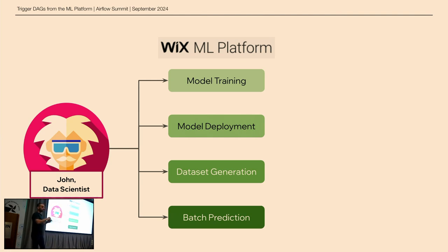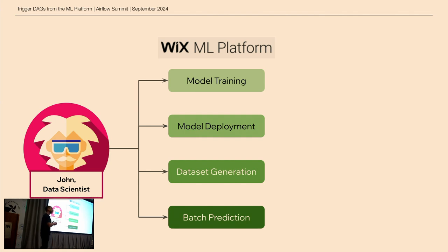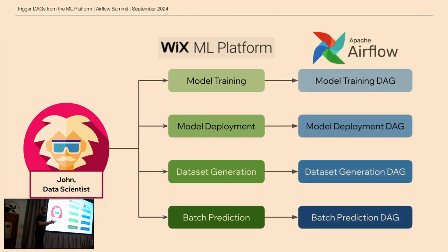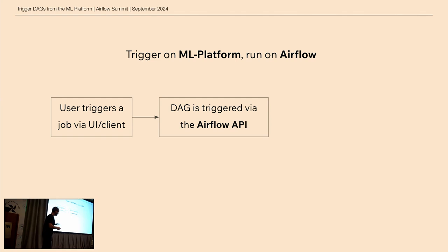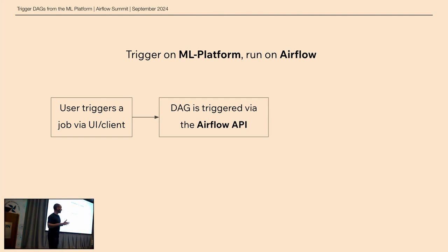Whatever job John wants to run — be it training a model, deploying it, or running predictions — he can configure and trigger it from the ML Platform. But behind the scenes, what runs these jobs are Airflow DAGs. Each job has a corresponding Airflow DAG that actually runs it, and the way to trigger these DAGs goes through the ML Platform. So John is triggering DAGs from the user-friendly ML Platform, but the job runs on Airflow. The user triggers a job from the ML Platform, and this job is converted into an Airflow DAG run using the Airflow API.